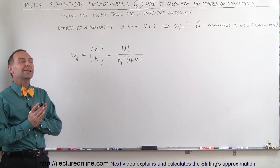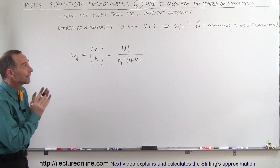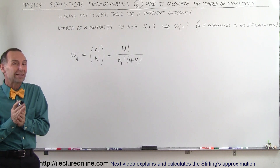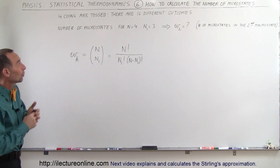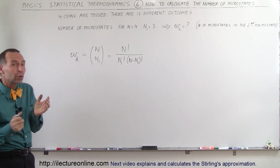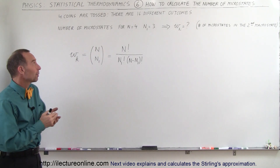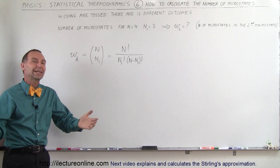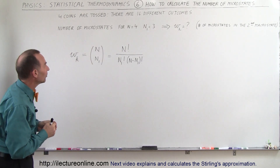Welcome to ElectronLine. Now let's take a look at how to calculate the number of microstates in statistical thermodynamics. We're going to start out by using a simple experiment where we have four coins. We're going to toss the four coins, and you can have 16 possible outcomes.